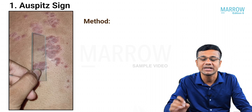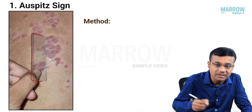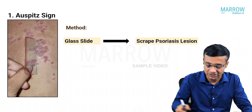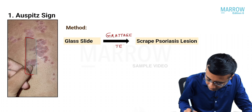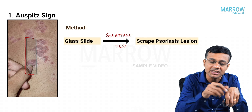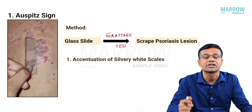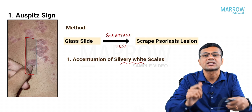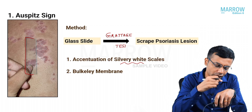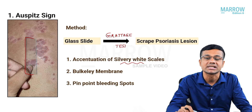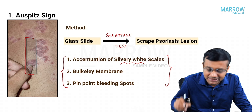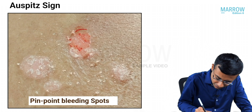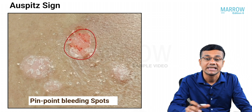Auspitz sign is frequently asked in exams. A glass slide is used to scrape the lesion — this test is called Grattage's test. When scraping: first, there is accentuation of the silvery white scales; second, you reach a membrane called Bulkley's membrane; and third, further scraping leaves behind pinpoint bleeding spots. All three points are important, and the end result — pinpoint bleeding spots — constitutes the Auspitz sign.